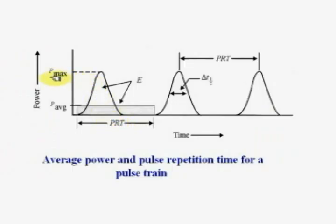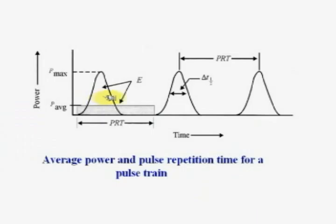The maximum height of the pulse we call P_max, or the maximum power. The area under the pulse is the energy of the pulse, which is usually not constant in shape, but by and large the energy will be quite stable. Another parameter is the width of the pulse at half the height — this is called full width at half maximum, also called delta T half.